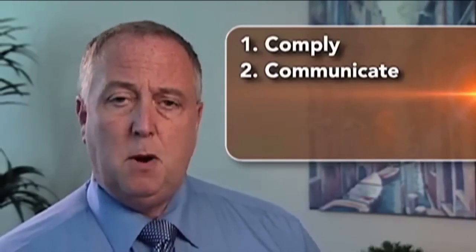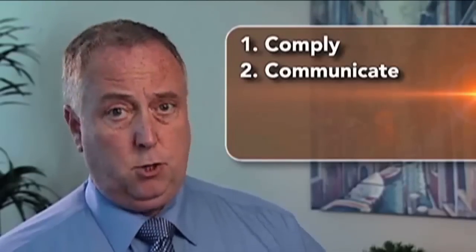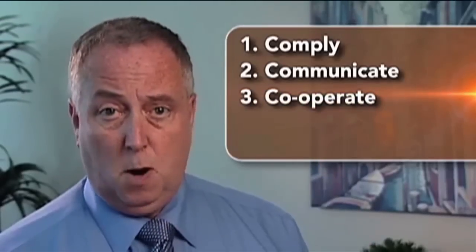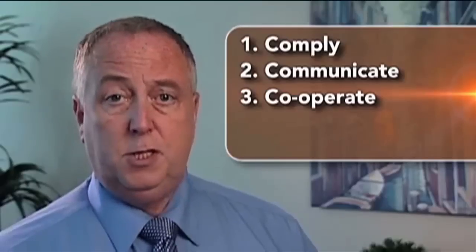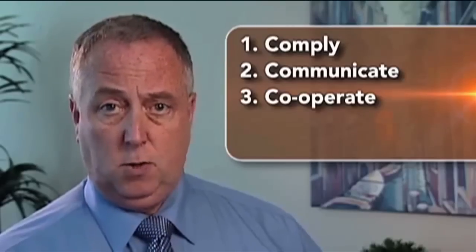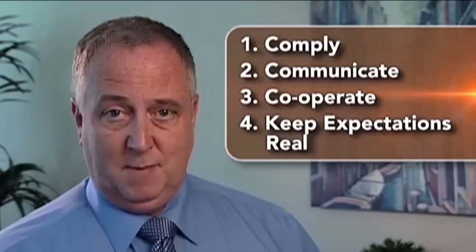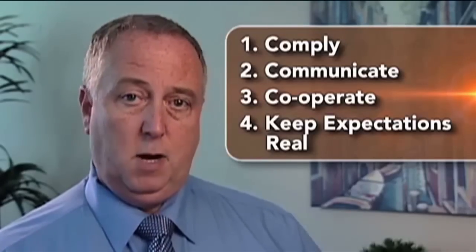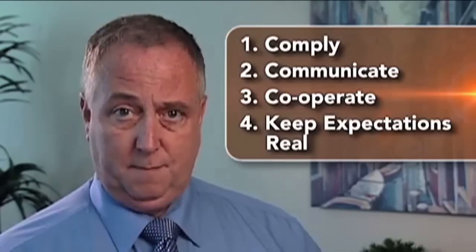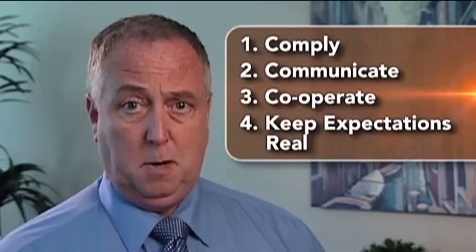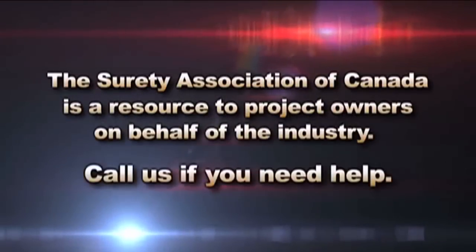Second, communicate: keep the bonding company informed of any issues as they arise and send out the default notice promptly. Third, cooperate: make sure the bonding company has access to your knowledgeable staff and the relevant contract documents — that's critical in determining what the obligation is. Finally, keep your expectations realistic. A bonding company can help you solve the problems that arise from a contractor default, but they can't make those problems completely disappear. If a job is eight months behind, it's not realistic to expect the bonding company to make up those eight months in just three weeks.